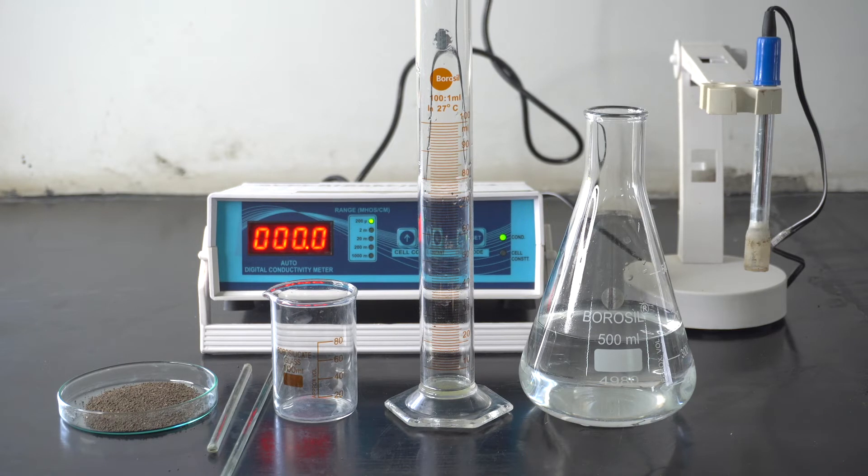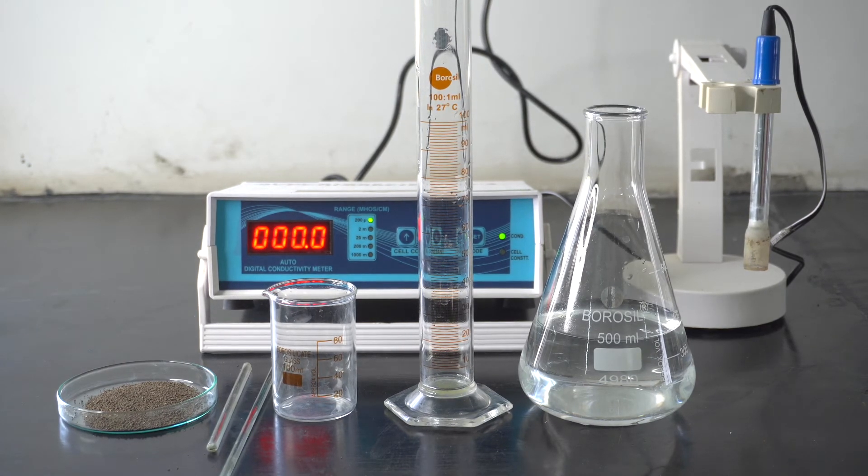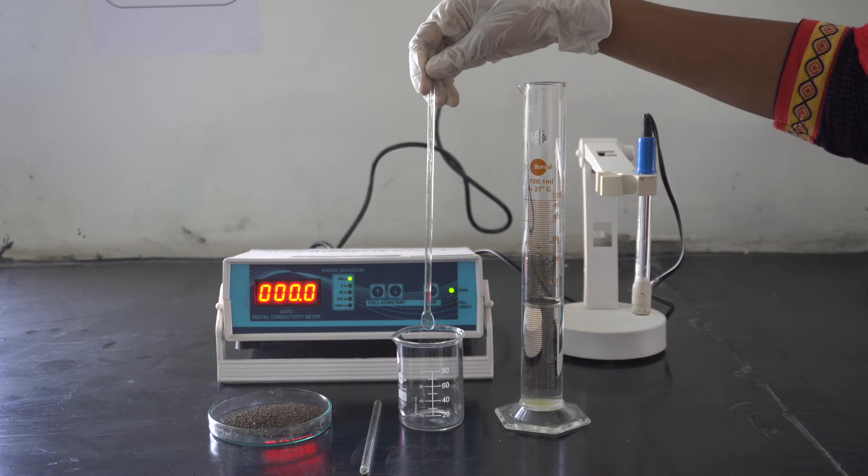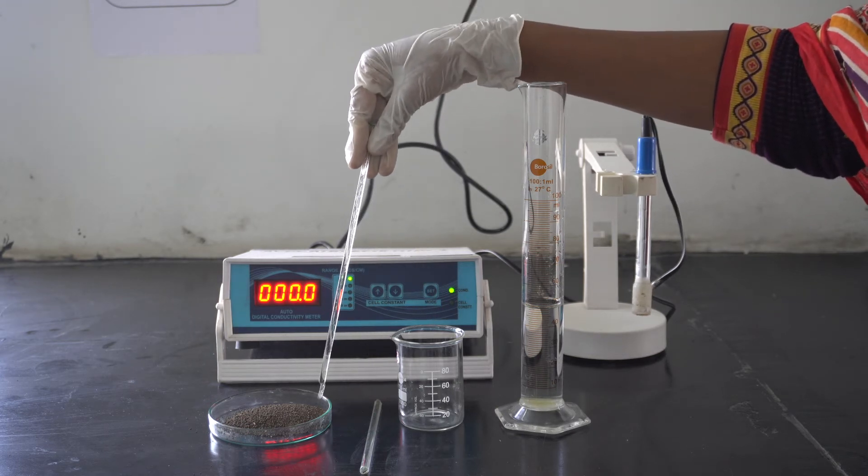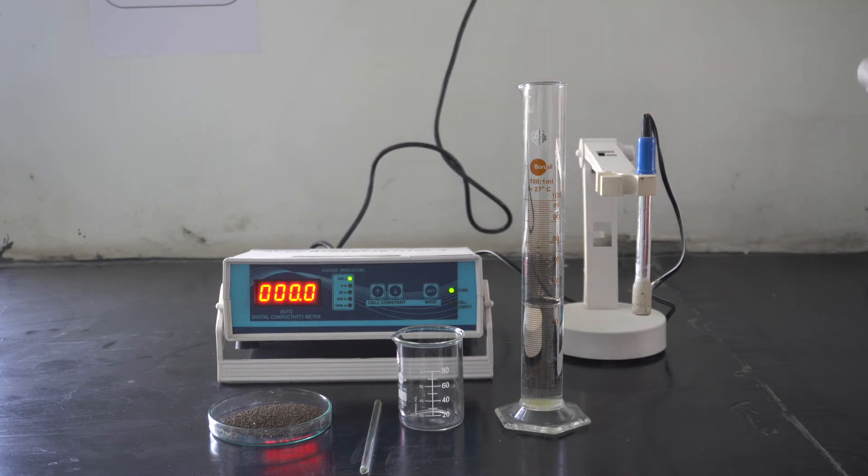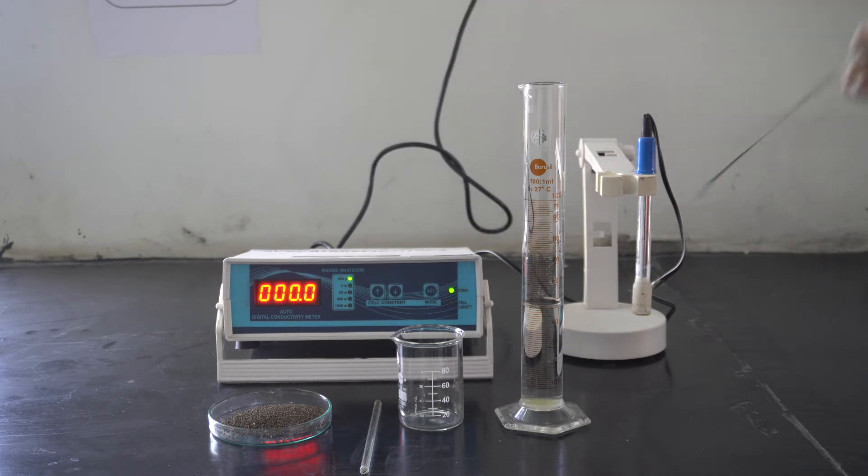Let's get to know more about how to measure electrical conductivity of soil sample. First, we will require measuring cylinder, beaker, glass rod, 20g of soil sample, electrical conductivity meter, and electrode.